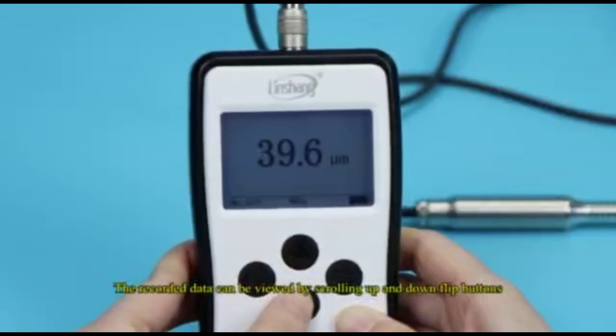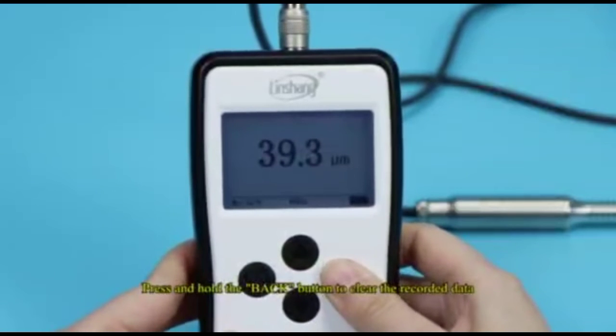The recorded data can be viewed by scrolling up and down flip buttons. Press and hold the back button to clear the recorded data.